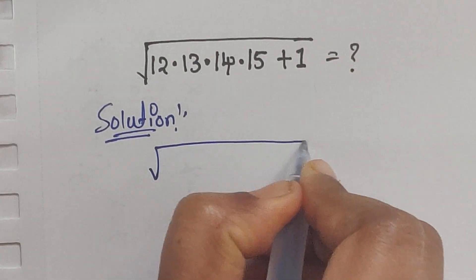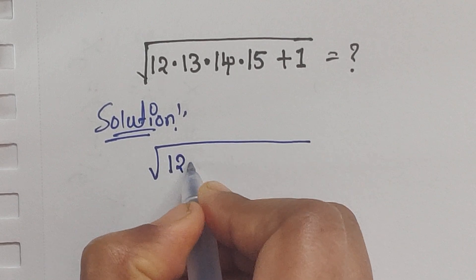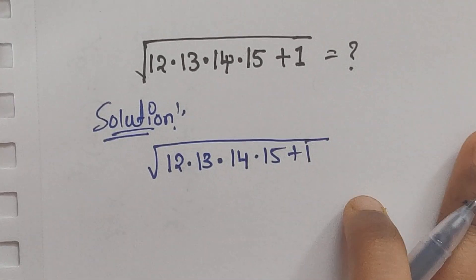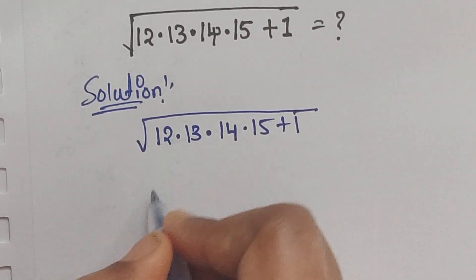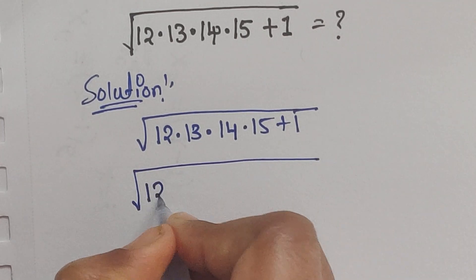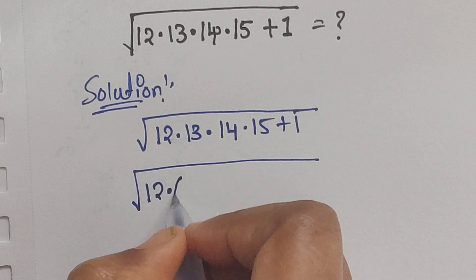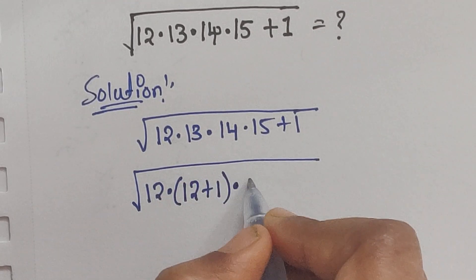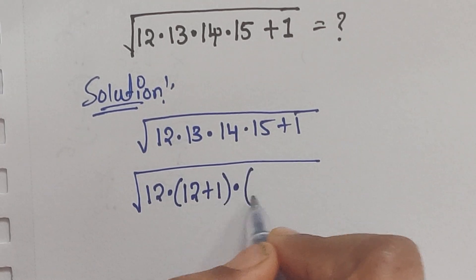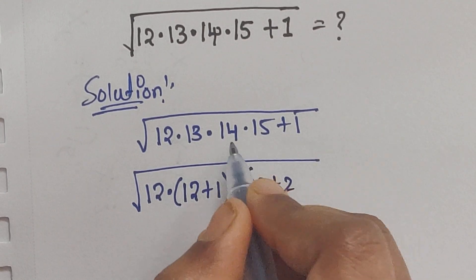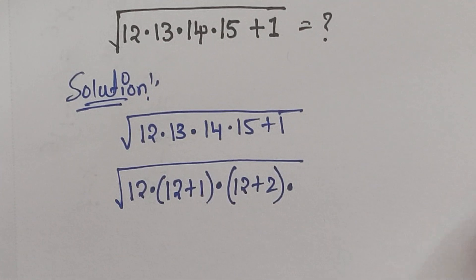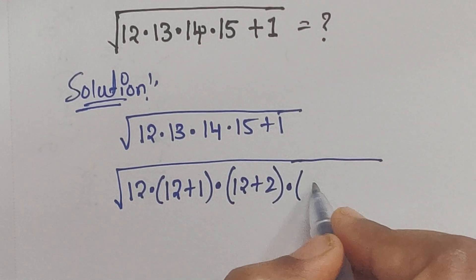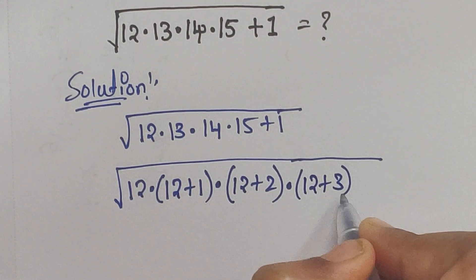We have the question: square root of 12 times 13 times 14 times 15 plus 1. We can write 13 as 12 plus 1, we can write 14 as 12 plus 2, and we can write 15 as 12 plus 3.